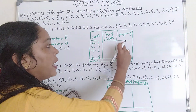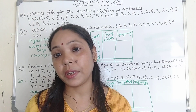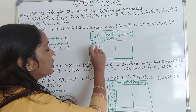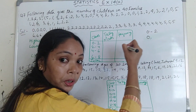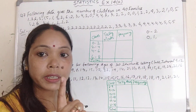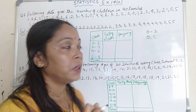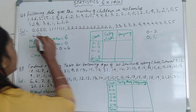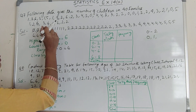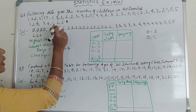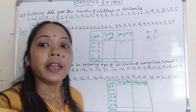Now we have to write the frequency. Frequency means the number of times an observation appears. For the interval 0 to 2, you have to count the values 0 and 1 — not 2, since we are excluding 2. Counting 0s and 1s gives us: 1, 2, 3, 4, 5, 6, 7, 8, 9, 10, 11. The frequency for this interval is 11.